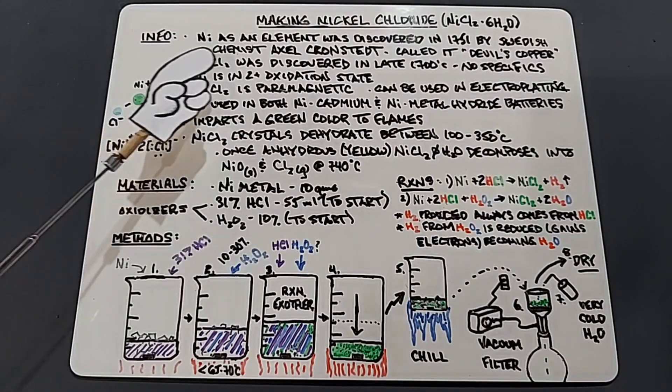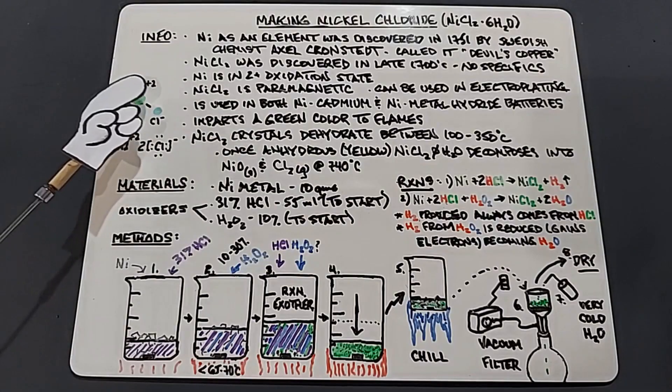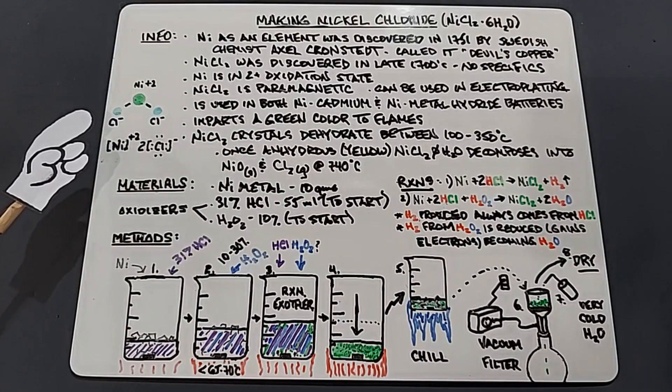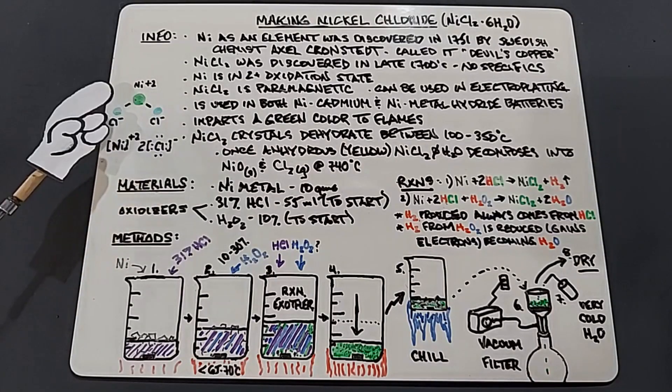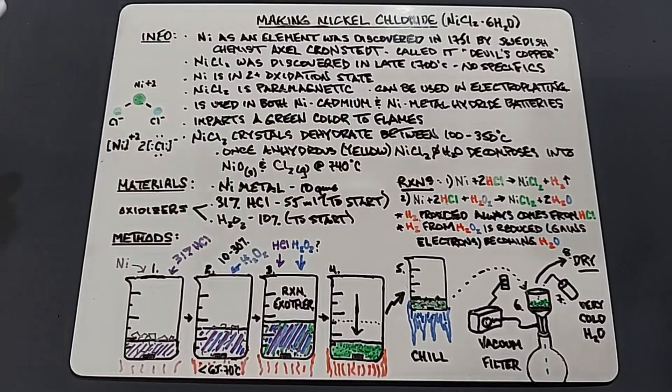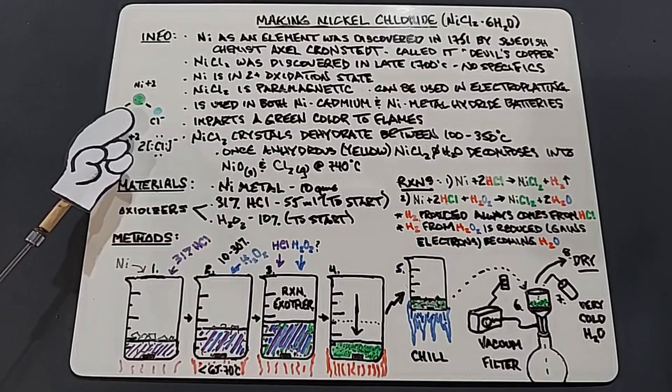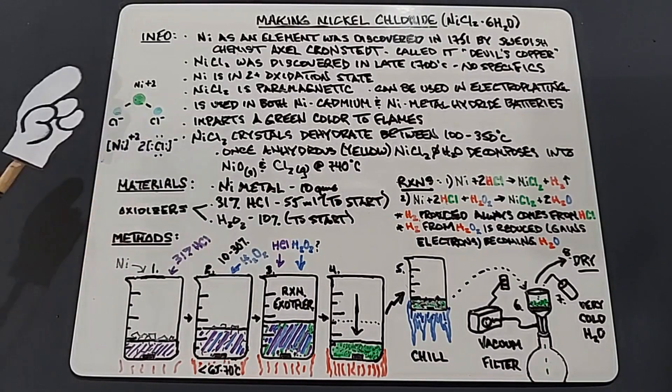When nickel is in nickel chloride, it's in the 2+ oxidation state, and you can see here from my diagram the +2 nickel with chlorines each having a negative charge attached to either side of the nickel atom. Nickel chloride is also paramagnetic, and if you draw it out in such nomenclature you can see there are two free or unpaired electrons that are left untouched, and that is what makes nickel chloride paramagnetic.